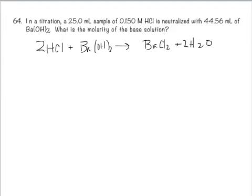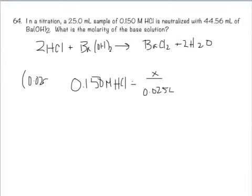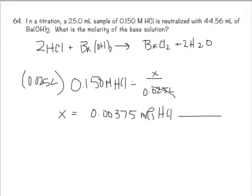Once again, you're going to start with what you know. You know the molarity of the acid, 0.150 molar HCl. I do not know the number of moles, but I do know the volume is 25 mils, so 0.025 liters. Multiply both sides by it, and you come up with x equals 0.00375 moles of hydrochloric acid.